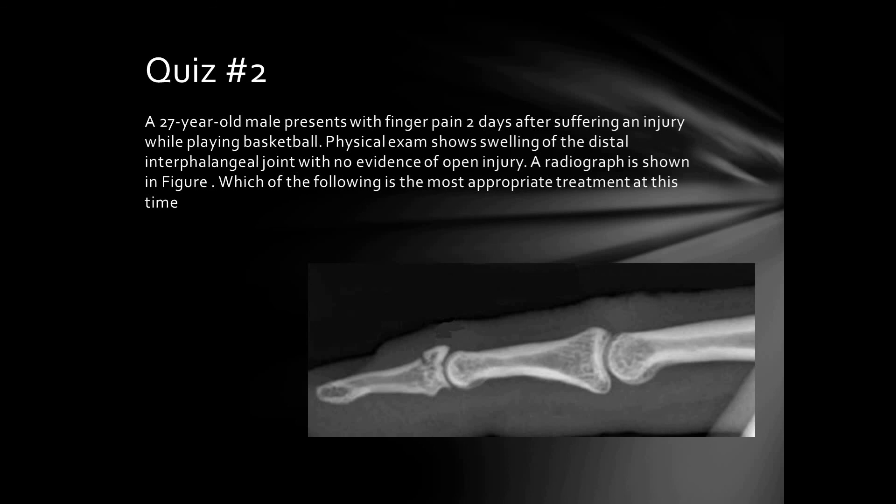A 27-year-old male presents with finger pain two days after a baseball injury. Physical examination shows swelling of the distal interphalangeal joint with no evidence of open injury. Radiograph shows bony mallet finger.